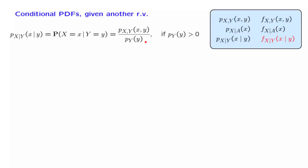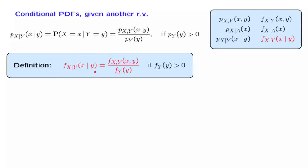Unfortunately, in the continuous case, a definition of this form would be problematic because the event that Y takes on a specific value has zero probability, and we cannot condition on a zero probability event. However, we can take this expression as a guide on how to define a conditional PDF in the continuous case. This is the definition, which just mimics the formula from the discrete case. This conditional PDF is well defined as long as the denominator is a positive quantity.